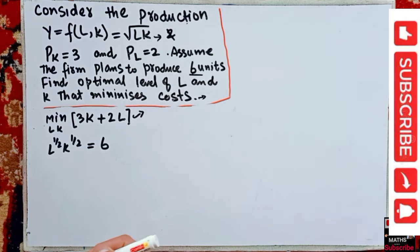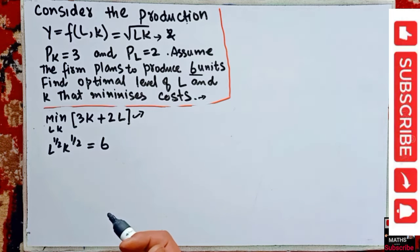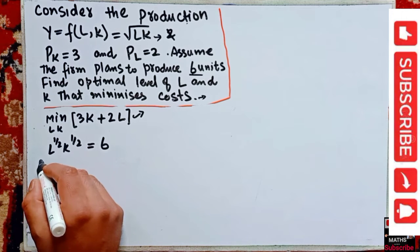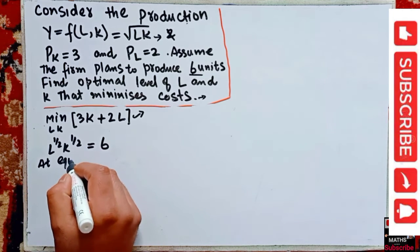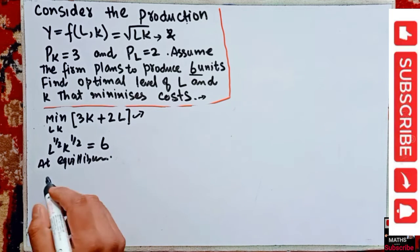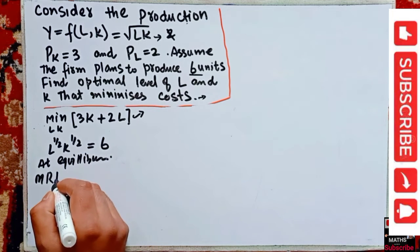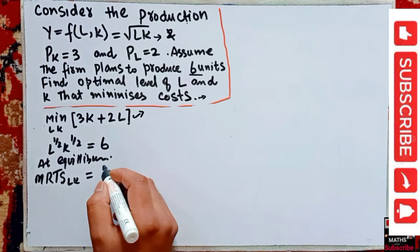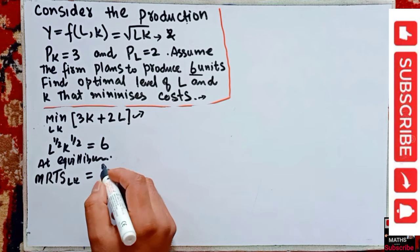We could have used the Lagrangian method to solve this, but we will use the simple shortcut — the tangency condition. The tangency condition requires that at equilibrium, the marginal rate of technical substitution between labor and capital should be equal to the ratio of the input prices, that is price of labor divided by price of capital.